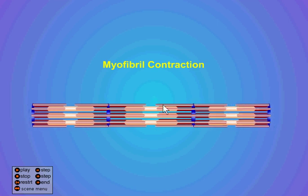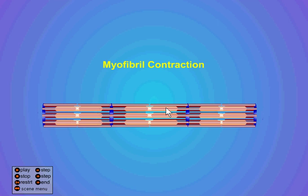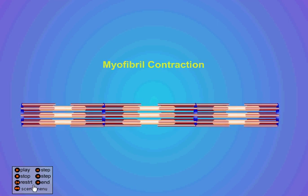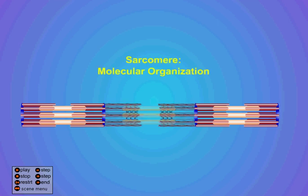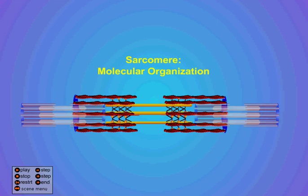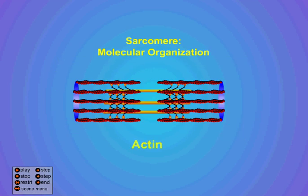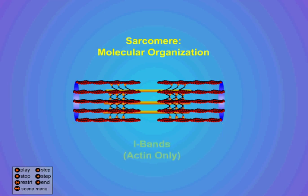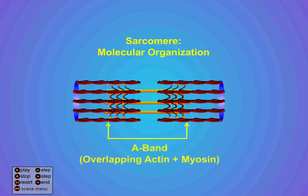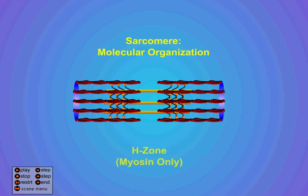That happens because the actin and the myosin are getting pulled together. What's actually happening is the actin's getting pulled by the myosin. Those little myosin heads will be pulling the actin along. So let's have a look at that down at the molecular level. This is actin and myosin sliding across each other — this is our actin, and in the middle there we've got our myosin. And there you can see the Z-bands again, and the H-zone in the middle.